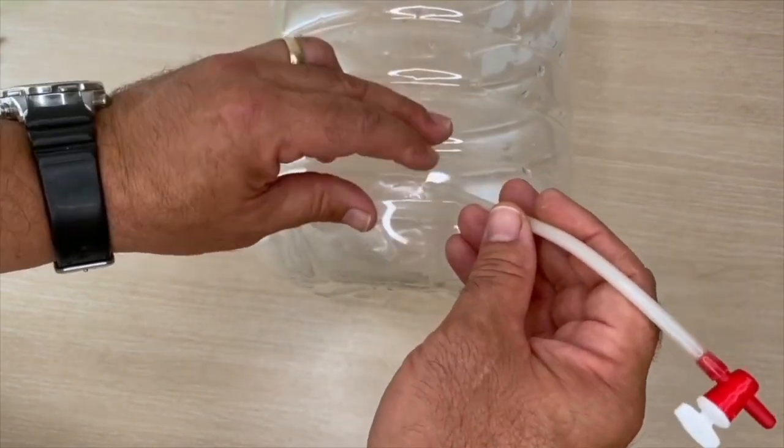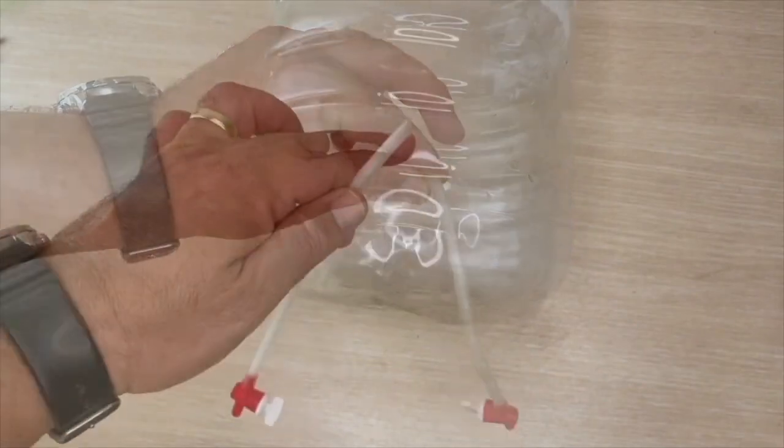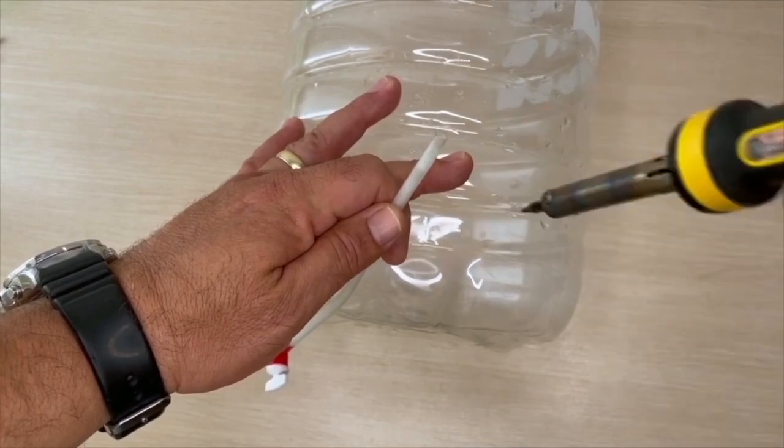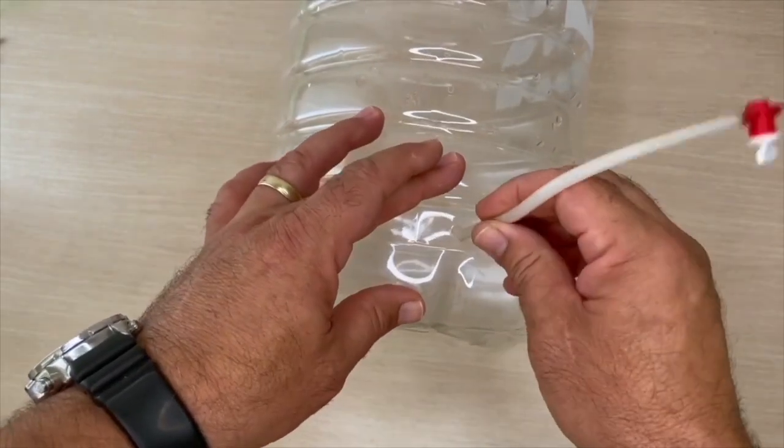We will fix this hose near the bottom of the pet bottle. Make a small hole with a soldering iron or a heated screwdriver. Insert the hose through this hole.